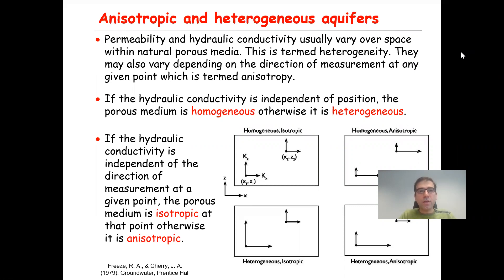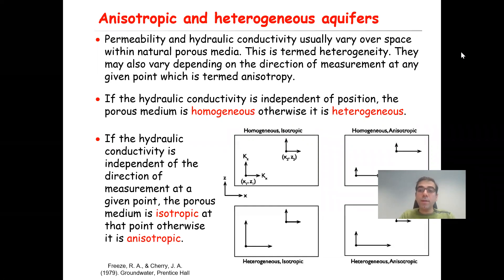In the previous lecture, we discussed about permeability and hydraulic conductivity of porous media. These quantities may vary over space. In other words, depending on the location of your measurement, you may get a different value of permeability and hydraulic conductivity, and this is termed as heterogeneity. Not only depending on the location, but also depending on the direction of the measurement, you may get a different value of permeability or hydraulic conductivity, and that is termed as anisotropy.